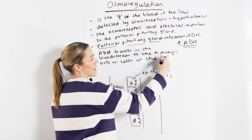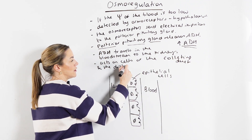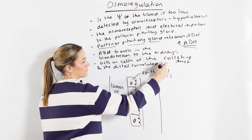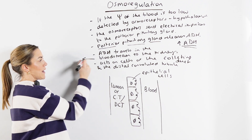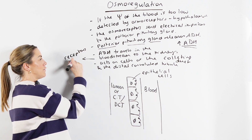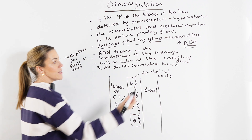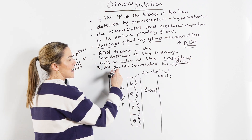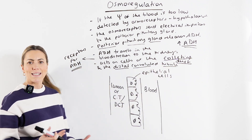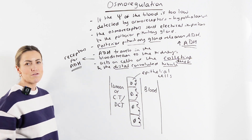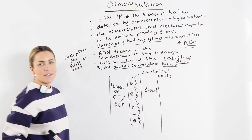It acts on the cells of the collecting duct, which is the final part of the nephron, and the distal convoluted tubule, which is the part of the nephron just before the collecting duct. Receptors for ADH are found on these two parts of the nephron — on the cells that line the collecting duct and the cells that line the distal convoluted tubule. This is worth stressing because exam questions have asked where you find ADH receptors, and you couldn't just say the nephron or the kidney tubule — you had to say the collecting duct and the distal convoluted tubule.